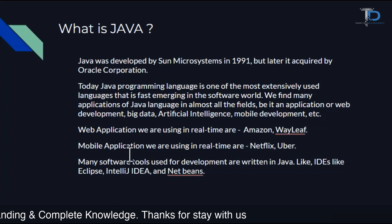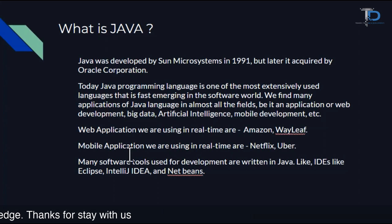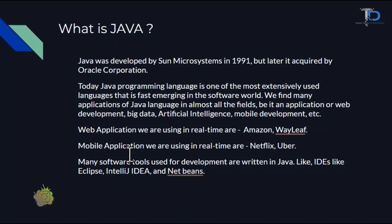In today's time, Java is one of the most used programming languages in our software world. If we look at real-time, where do we use it? In web applications, we are using Amazon software. Like shopping on Amazon, which we use in daily life — Amazon's web application is made in Java. Most people don't know about it, but Amazon everyone will know.